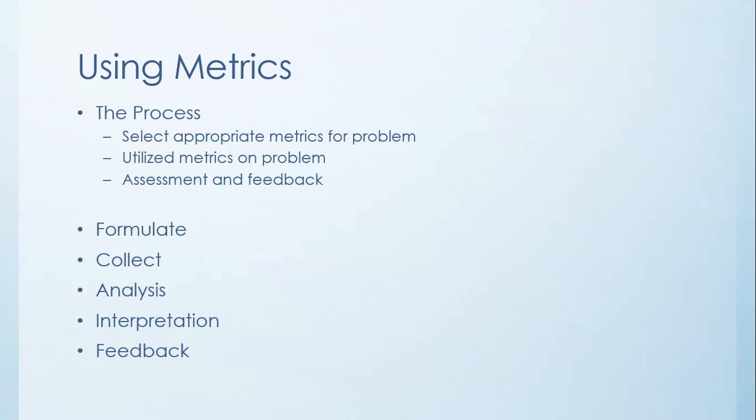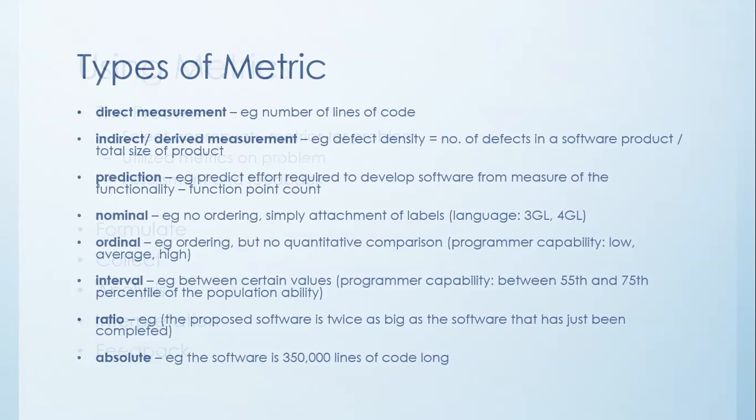With that, you need to be able to formulate how you're going to solve the problem, how you're going to actually collect it, how you're going to analyze it. You have to also figure out ways up front of how you're going to interpret it and how you're going to give feedback as a result of your process. So all of these are the key steps in actually using a metric in software engineering.